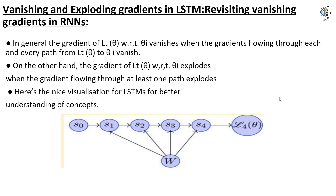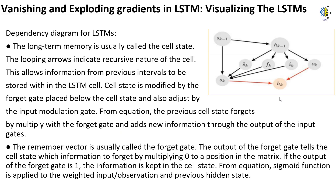You can see the image on the screen. Visualizing the LSTM's dependency diagram: the long-term memory is usually called the cell state. The looping arrows indicate the recursive nature of the cell, allowing information from previous intervals to be stored within the LSTM cell. The cell state is modified by the forget gate placed below the cell state, and also adjusted by the input modulation gate. The previous cell state forgets by multiplying with the forget gate and adds new information through the output of the input gate.